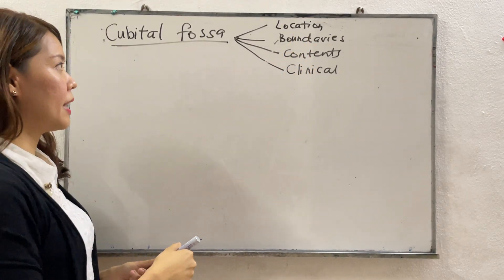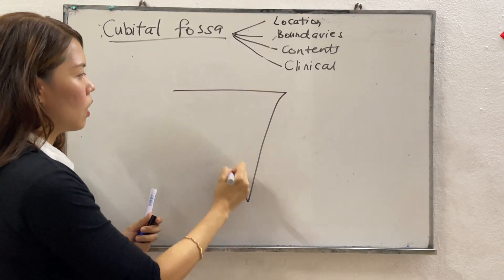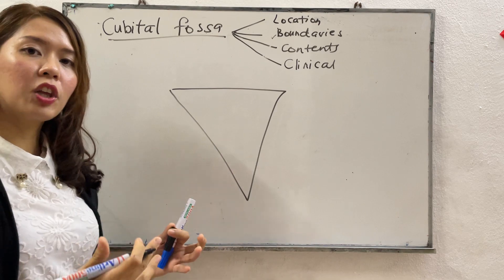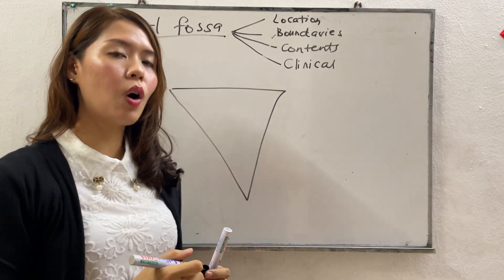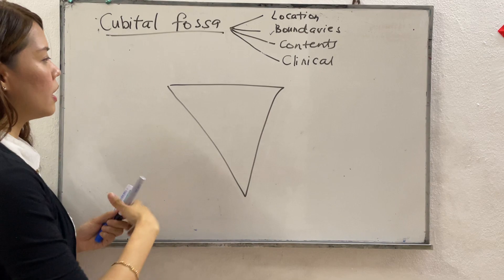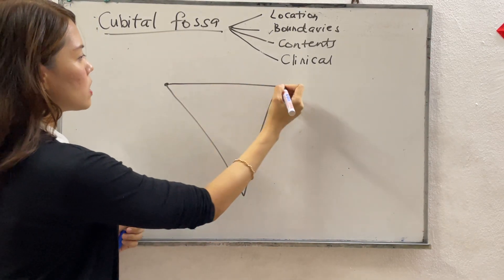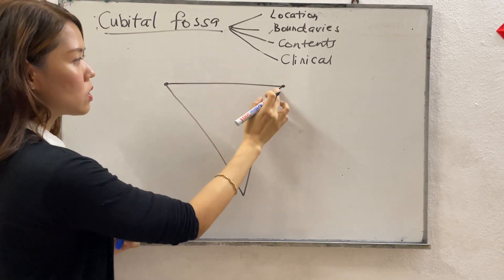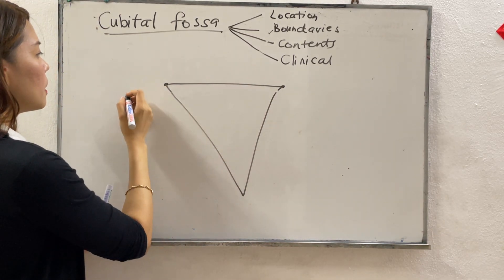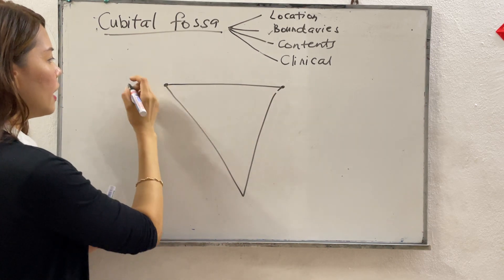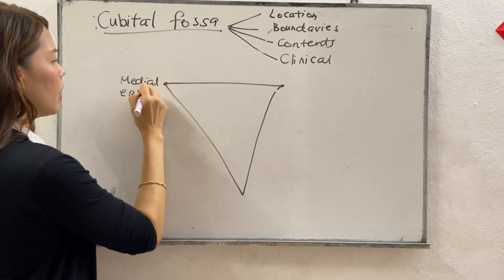So where is the location of the cubital fossa? The cubital fossa is the triangular depression located anterior to your elbow joint. This is the base of the triangle, bounded by an imaginary line between the medial epicondyle and lateral epicondyle of the humerus.